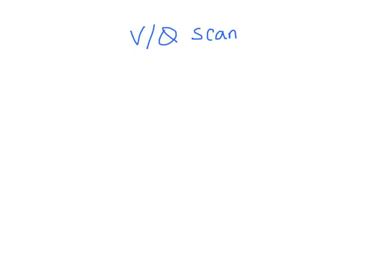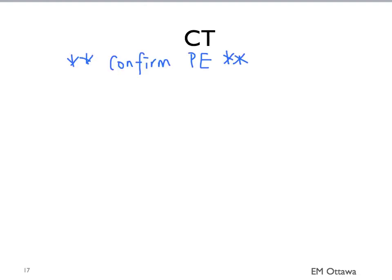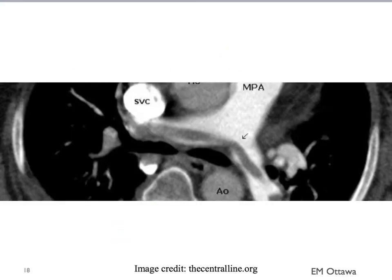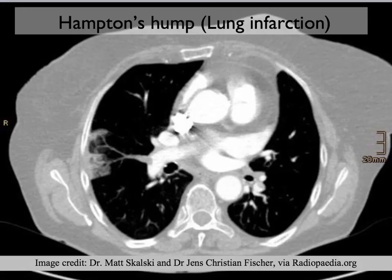A VQ scan is most helpful in normal lungs, and it is not as sensitive or specific as CT scan. A CT scan is the imaging of choice to confirm a PE. It uses contrast dye through the blood vessel, and if there is a clot, it is picked up as a filling defect. It can also provide information about pulmonary infarct and other diagnoses. On this CT scan image, you can see IV contrast going through the main pulmonary artery, and where the arrow points, there is a pulmonary embolus visible as a filling defect — less white than the surrounding contrast. We can also see pulmonary infarct, such as the Hampton's hump seen earlier on chest X-ray, which is much easier to identify on CT chest.